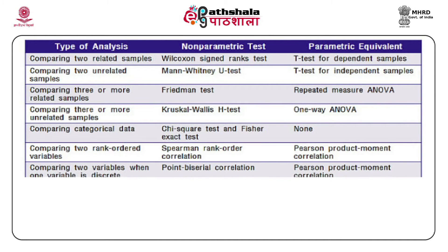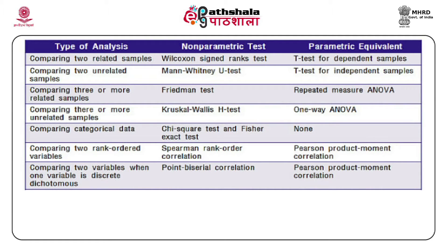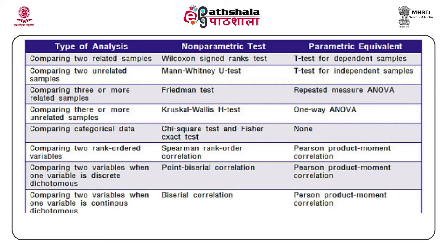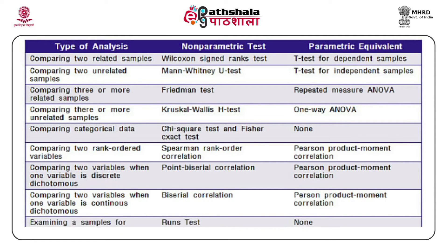When comparing two variables where one variable is discrete dichotomous, the non-parametric test may be point biserial correlation, and the parametric equivalent is Pearson product-moment correlation. When one variable is continuous dichotomous, the non-parametric test is biserial correlation, and the parametric equivalent is Pearson product-moment correlation. When examining a sample for randomness, the non-parametric test is the runs test, and there is no parametric equivalent.